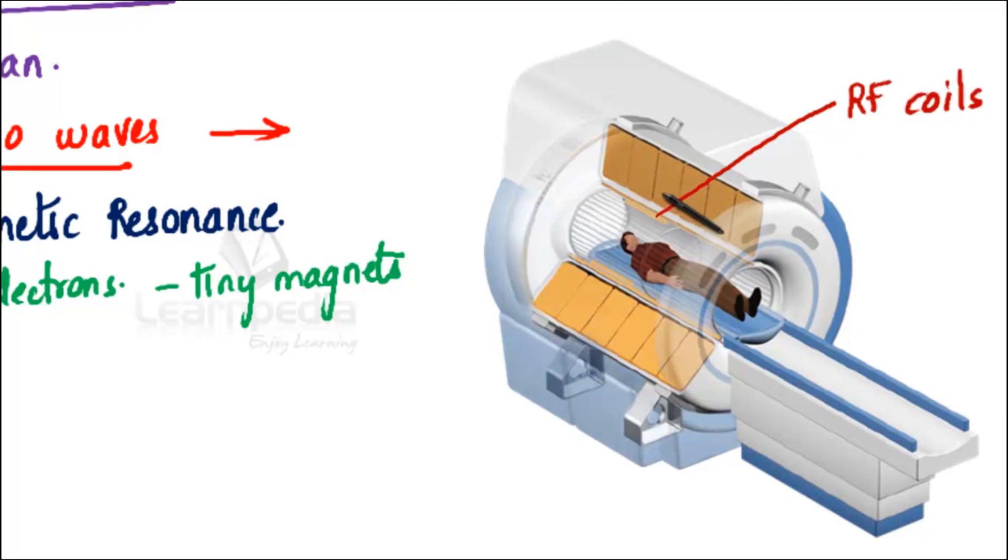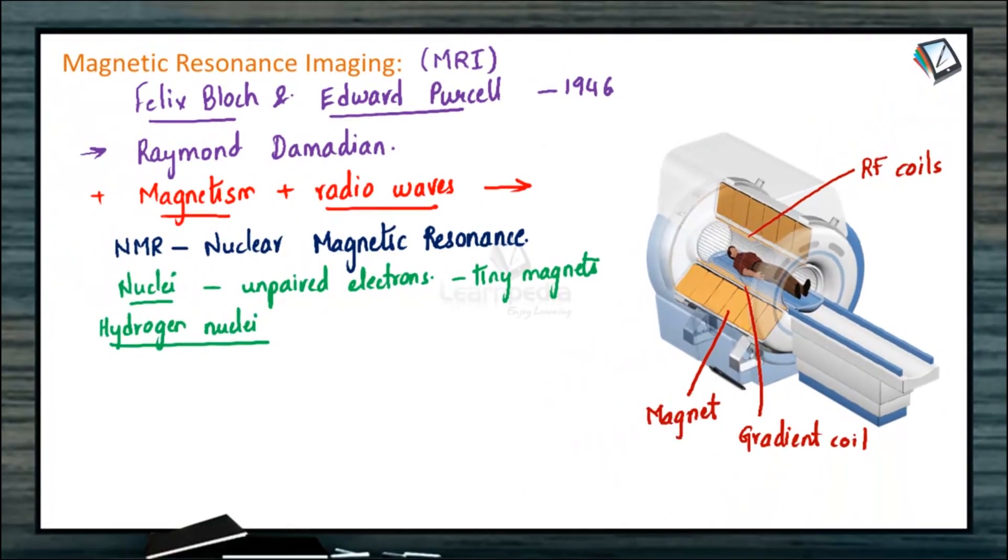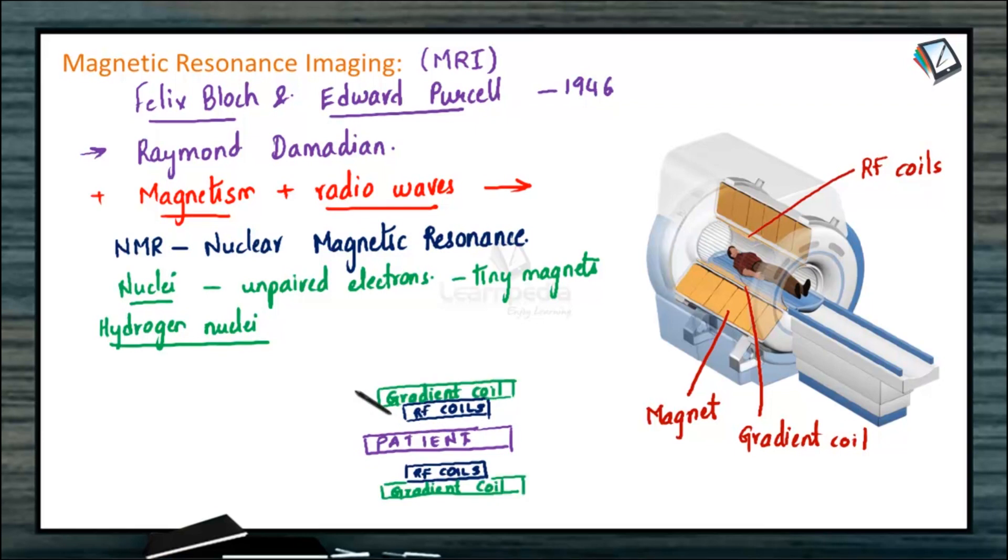Now outer to this RF coil is the gradient coils. So this thin line, if you can observe, this is the gradient coil. And finally, surrounded by the primary magnet. So all these coils as well as the magnet are present on 360 degrees. On all sides it is present. Now suppose if the patient is lying here, surrounding the patient you have the RF coil and surrounding this RF coil is the gradient coil. And surrounding this gradient coil is the primary magnetic field.